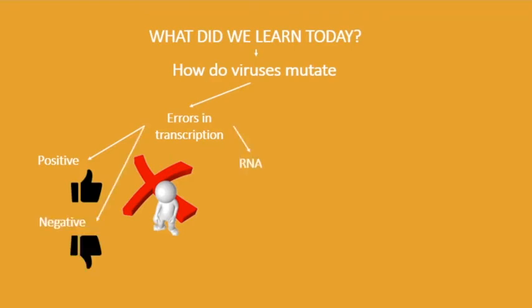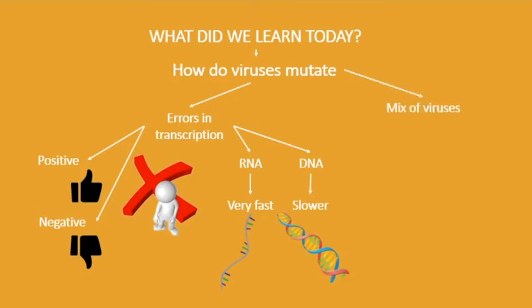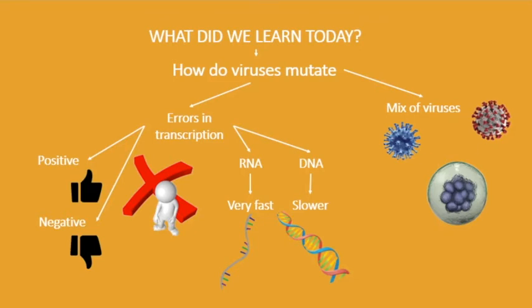In viruses with RNA, these mutations can happen very fast. In viruses with DNA, these mutations happen slower. If two similar viruses enter a cell at the same time, when they duplicate, they can produce a new virus that is a mix of them both.